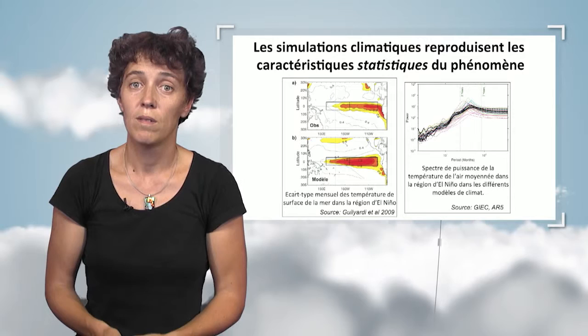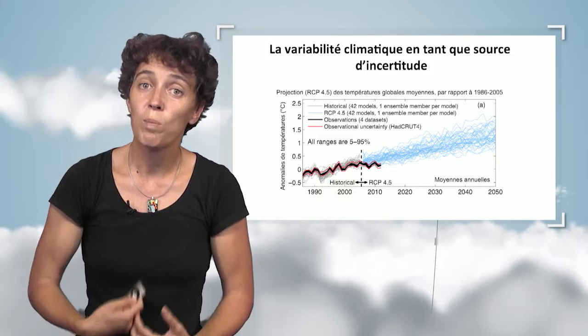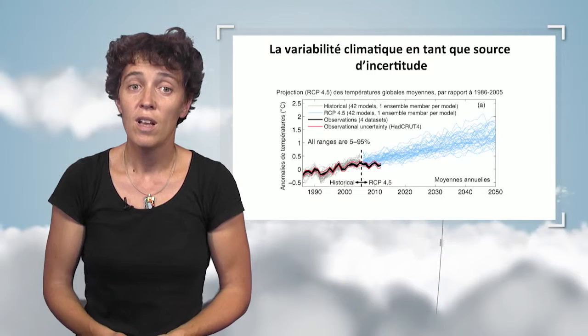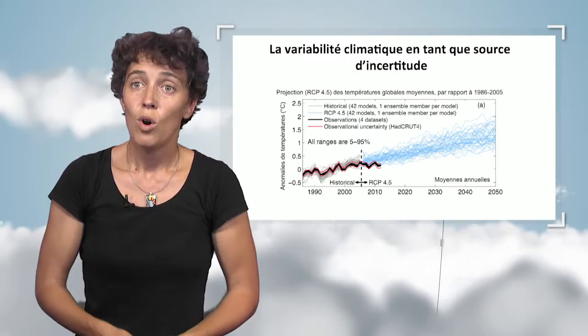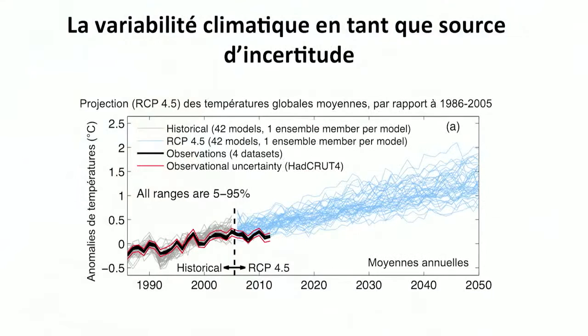In terms of climatic projection — when one tries to predict the climate for the next decades depending on several forcing scenarios — internal climatic variability is a source of uncertainty. The various trajectories followed by climatic simulations constitute a spread which is a source of uncertainty for decision-makers trying to understand what the climate will be in 2050.